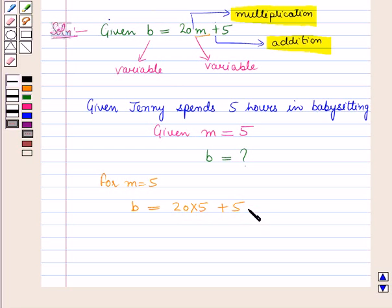Now for solving this, first of all we will solve the operation of multiplication. So this is equal to 20 times 5 which is 100 plus 5. And now we will solve the operation of addition. So this is equal to 105.